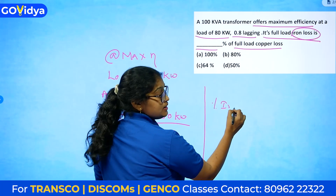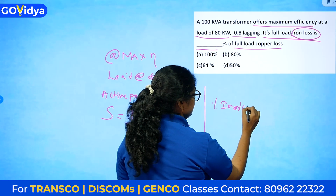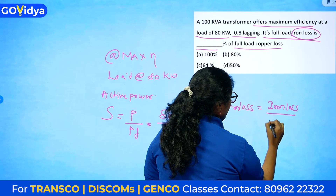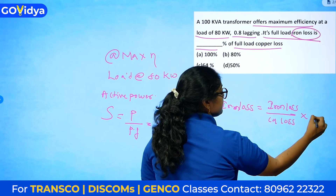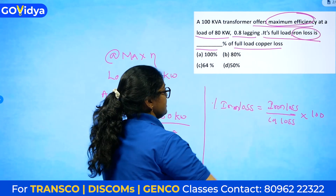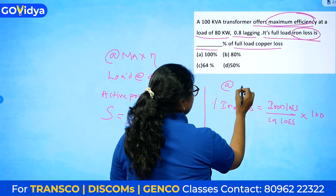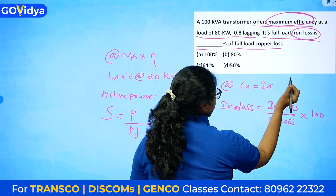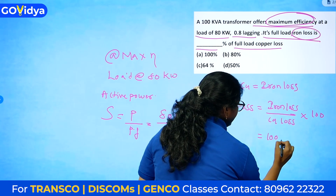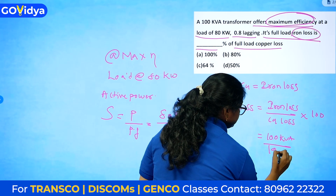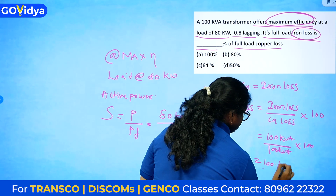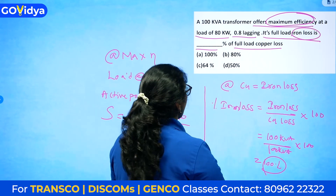To calculate percentage iron loss, the formula is iron loss divided by copper loss, multiplied by 100. At maximum efficiency, copper loss equals iron loss. So substituting 100 kVA by 100 kVA gives 100%. Option A matches — the answer is 100 percent.